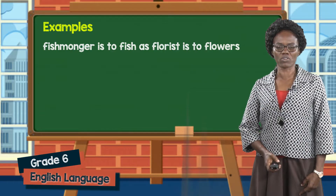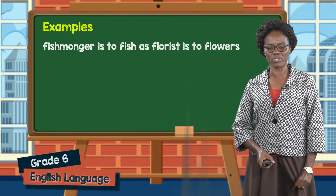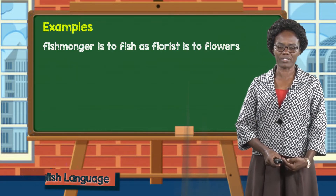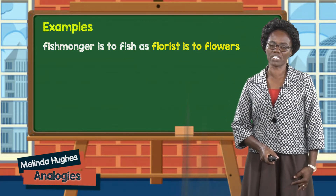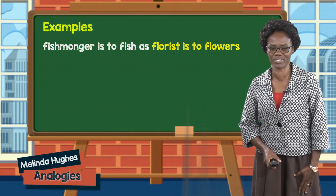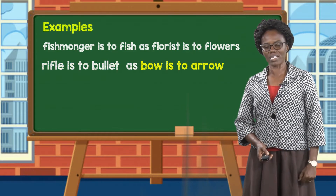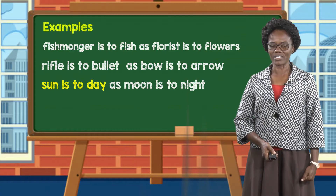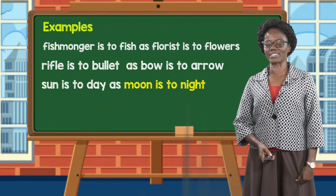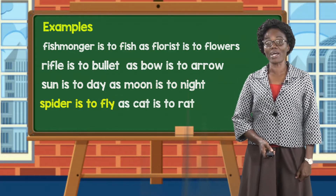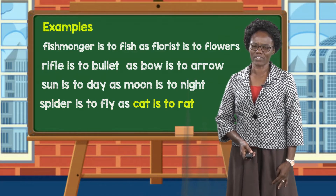In relationships, of course, we look for the common element. So we have: fishmonger is to fish as florist is to flowers. Rifle is to bullet as bow is to arrow. Sun is to day as moon is to night. Spider is to fly as cat is to rat.